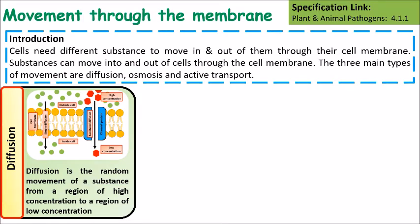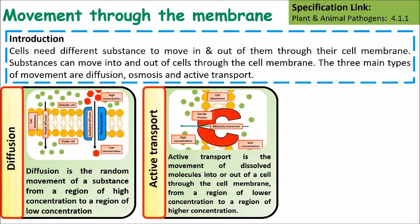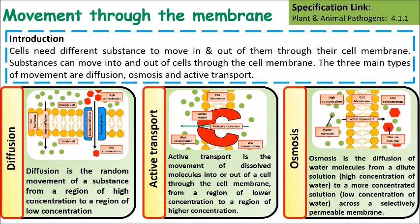Diffusion is the passive process of molecules moving from a high concentration to a low concentration. Active transport is where the cell is moving things from a lower concentration to a higher concentration. And finally, osmosis is the movement of water from an area of high concentration to an area of low concentration through a semi- or partially permeable membrane.